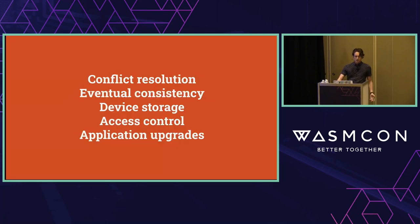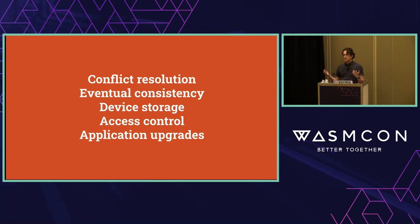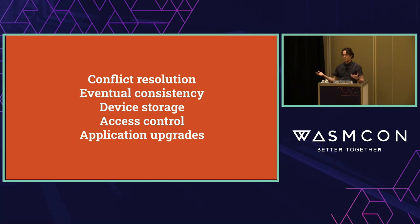So you might ask: why aren't all apps offline-first? If these are such great ideas, why do we even have this distinction? Well, it turns out there's some complexity you have to deal with. Conflict resolution is one of the primary problems — if two users are manipulating the same state on two different devices at the same time while offline and then come back online, you have to decide what to do. That's a really hard problem.